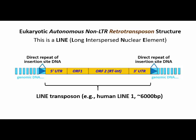The reverse transcribed transposition-ready LINE retrotransposon will consist only of the DNA region shown in yellow, including the 5' and 3' untranslated regions, or UTRs.